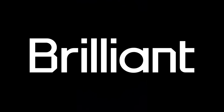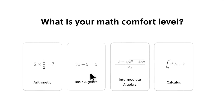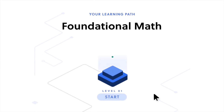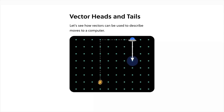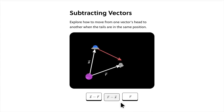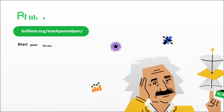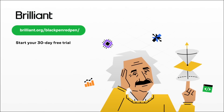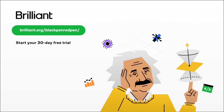Our sponsor today is Brilliant. Brilliant is the best online learning platform to help you excel in math and science, with thousands of interactive lessons ranging from basic math to advanced calculus. Their lessons cover topics like vectors — mastering vector operations helps you visualize and solve complex problems in multi-dimensional spaces. Try Brilliant free for 30 days using the link in the description, and get 20% off. Thanks to Brilliant for sponsoring, and thanks to you for watching!